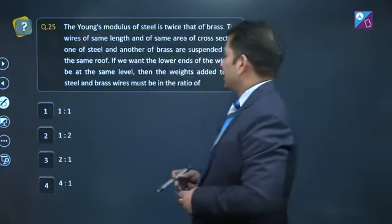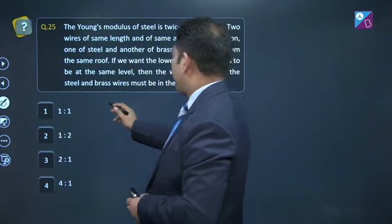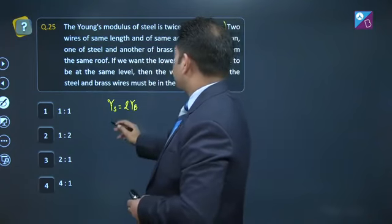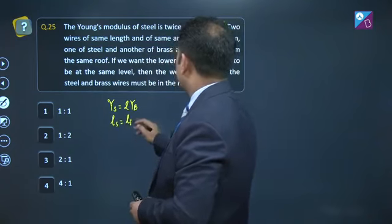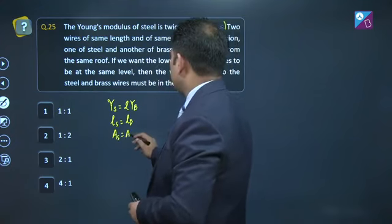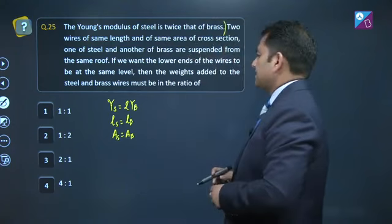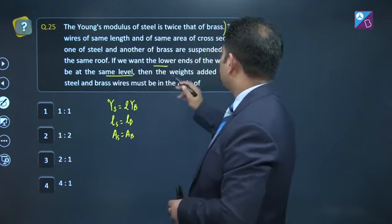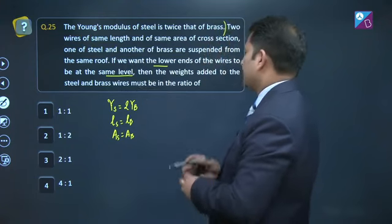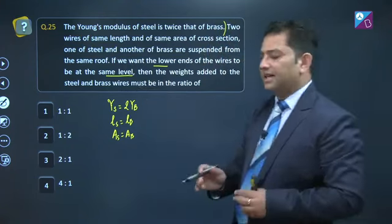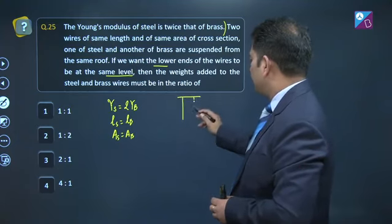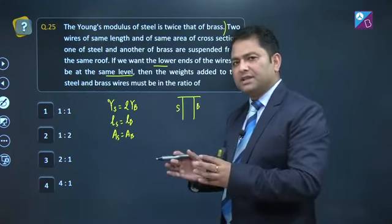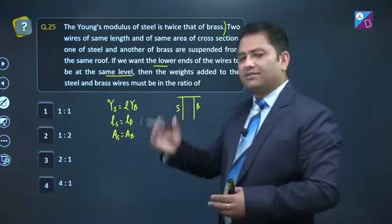Question number 25. Young's modulus of steel is twice that of brass. Ys is twice of yb, yahan tak ho gaya. Two wires of same length, ls equals to lb, same area, so as equals to ab. One of steel, other of brass are suspended from the same roof. If we want the lower ends of the wire to be at the same level, then the weights added to the steel and brass wire must be in the ratio of. Zara dhyan se dekhiye, initial length, original length same hai. Agar hum steel or brass ko same weight apply karenge, toh hundred percent elongation will be different, kyunki modulus of elasticity jo alag hai.